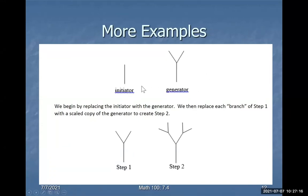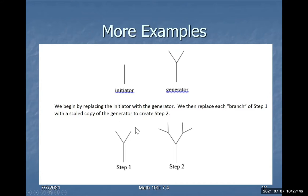The generator is this shape. Let's explain what's happening to the initiator as you go to the generator. In this case, from one end of the line segment, two new branches are appearing. That's what the generator does. You have step one, which is the generator, and then from its two ends, two more branches will grow from each — that's how step two is formed.